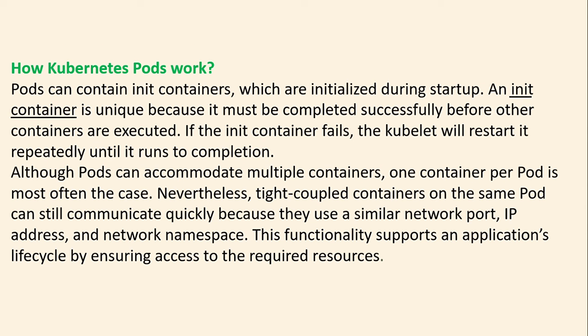How does Kubernetes work? Pods can contain init containers, which are initialized during startup. An init container is unique because it must be completed successfully before other containers are executed. If the init container fails, the kubelet will restart it repeatedly until it runs to completion. Pods can accommodate multiple containers, though one container per pod is most often the case. Tightly coupled containers on the same pod can communicate quickly because they share the same network port, IP address, and network namespace.